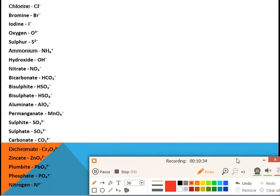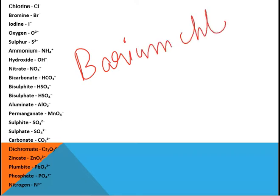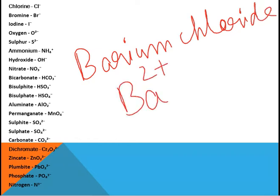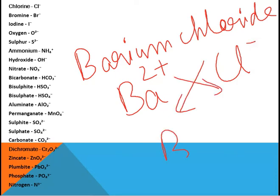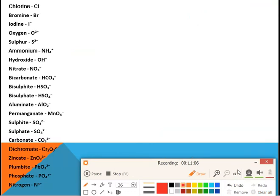Now suppose we want to write the formula for barium chloride. Barium is Ba²⁺ and chloride is Cl⁻. We exchange the valencies since they are not equal, and we get BaCl₂. Next, for calcium carbonate — which is chalk or marble — calcium is Ca²⁺ and carbonate is CO₃²⁻.